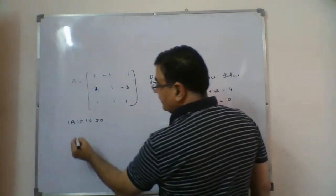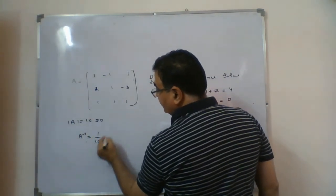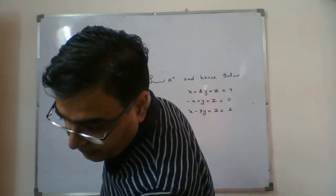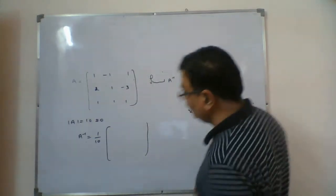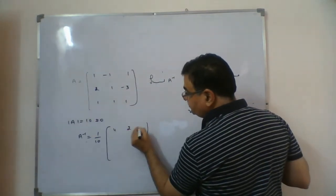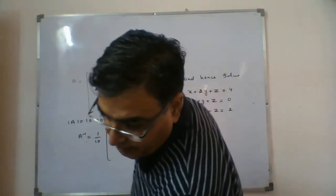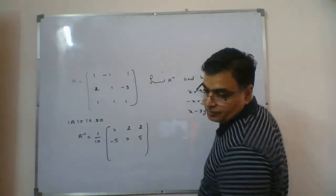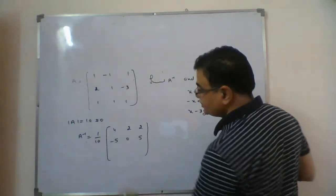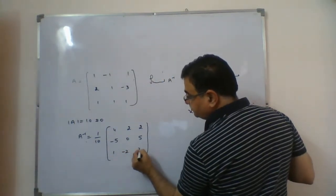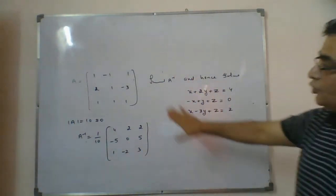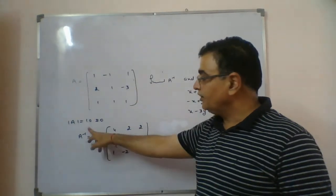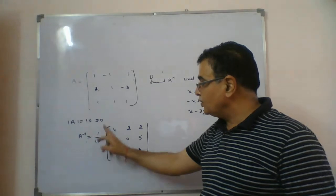Since the determinant is not 0, we can calculate A inverse, which will be (1/10) times the transpose of the cofactor matrix. Writing it directly: row 1: 4, 2, 2; row 2: -5, 0, 5; row 3: 1, -2, 3. These are the two pieces of information — first they ask for A inverse, and I have written it with determinant A = 10. A inverse is now calculated.